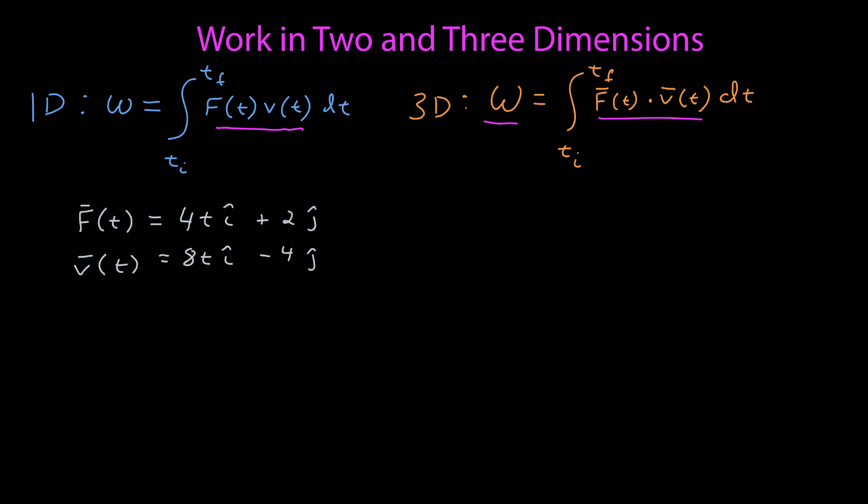Here I have a force as a function of time, 4t in the x direction, 2 in the y. The velocity has 8t in the x direction, minus 4 in the y. I can calculate that dot product, which gives us the product of the x components, which is 32t squared, the product of the y components, which is negative 8. This is now a scalar quantity that we can now integrate.